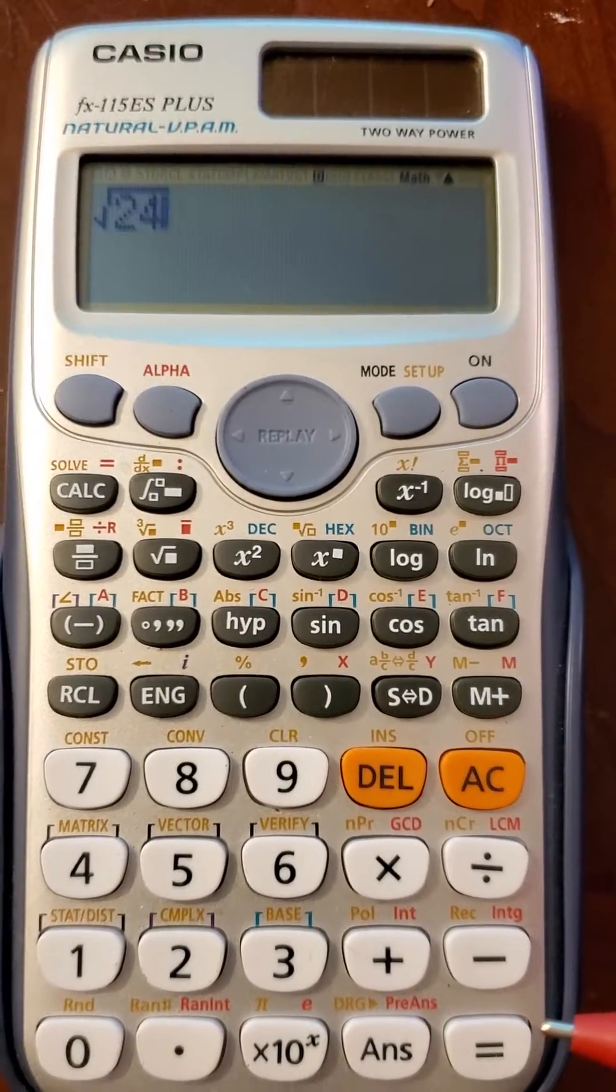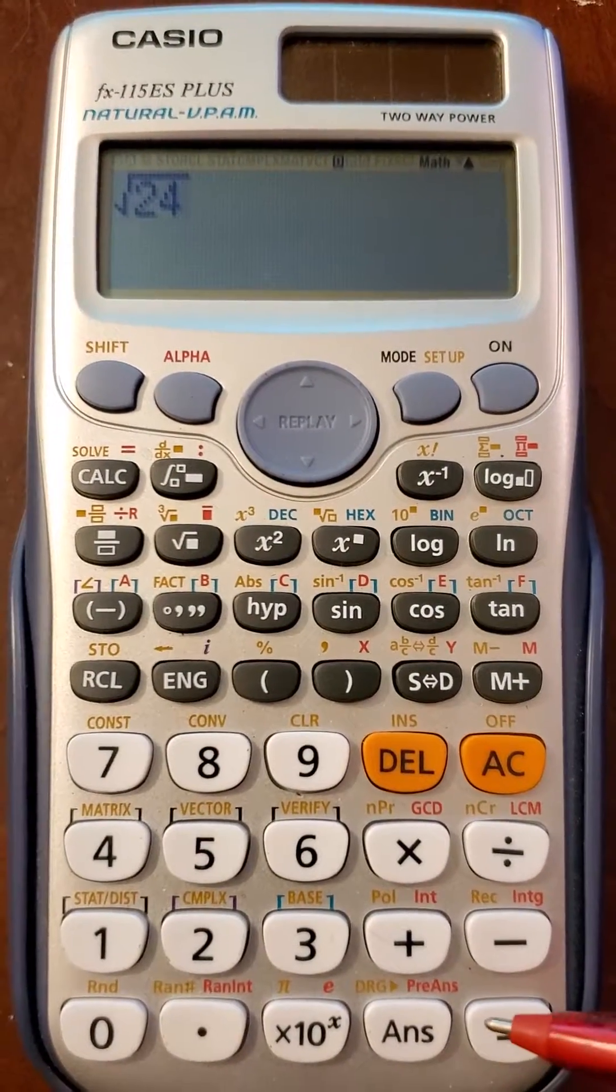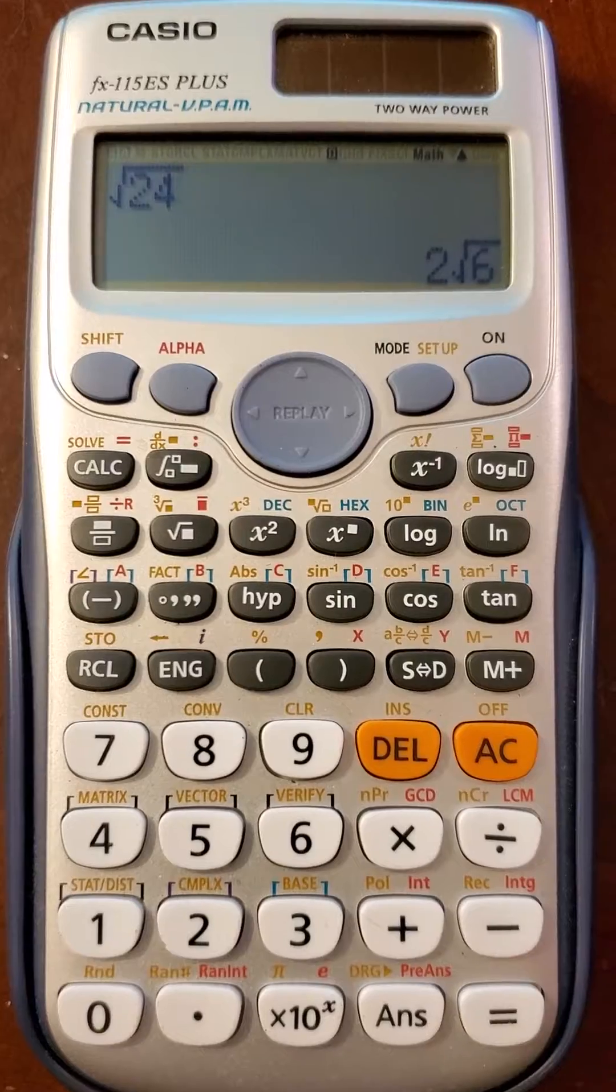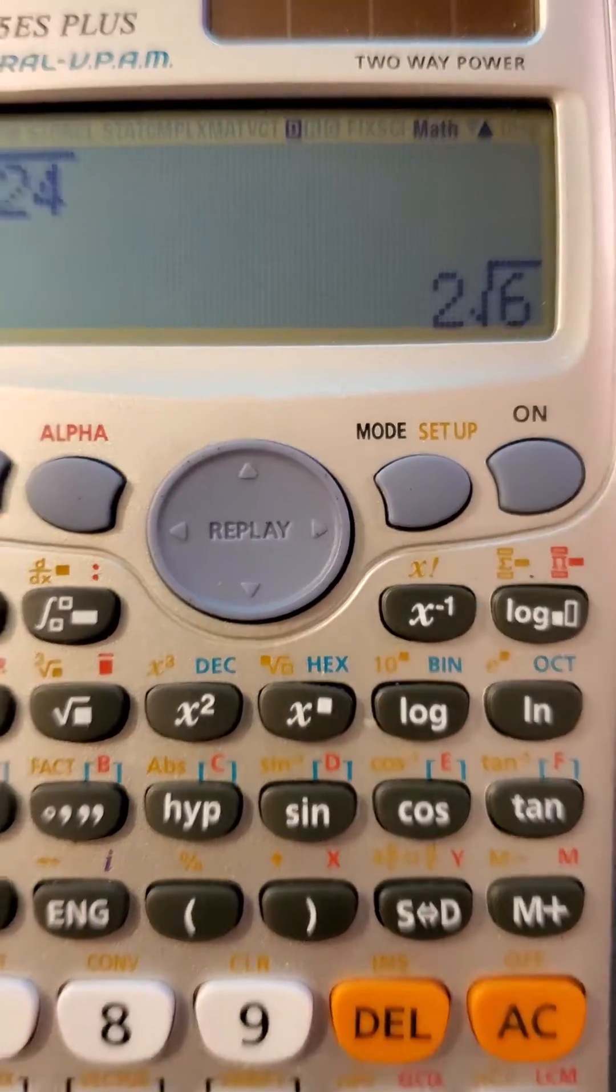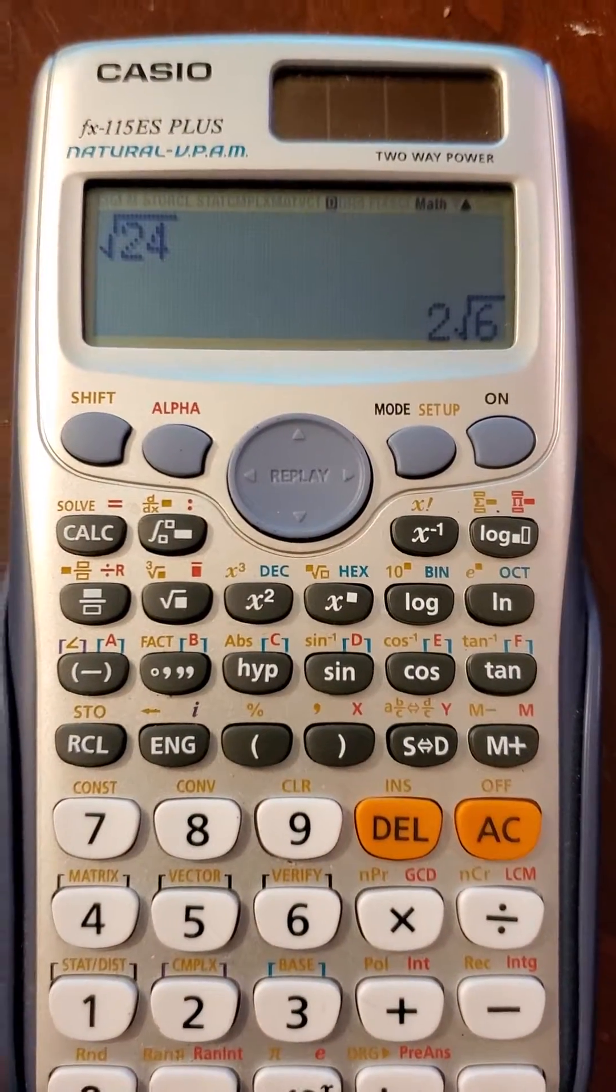Now, 24 doesn't square root nicely, and if you notice, when I hit the equal sign button, what the calculator does is it gives you the simplified radical answer. It actually breaks it down for you.